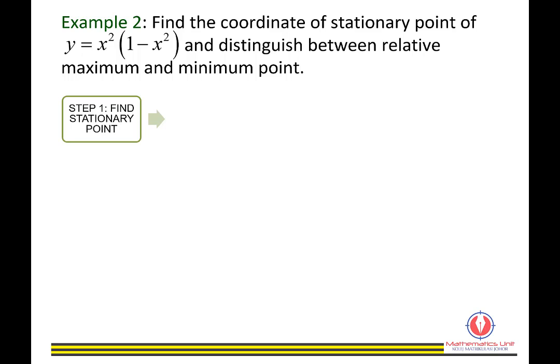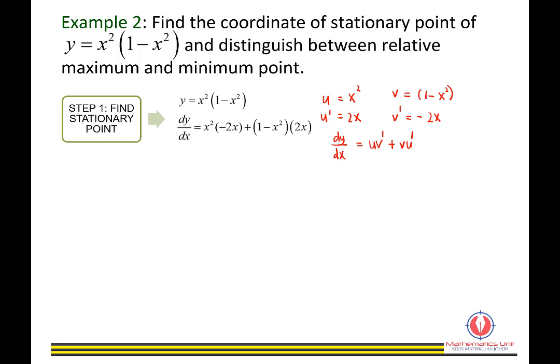In order to find stationary points, we start with the equation y equals x squared in bracket 1 minus x squared. We differentiate to find dy/dx. Identify u as x squared, so u prime is 2x, and v is 1 minus x squared, so v prime is negative 2x. Using the product rule formula uv prime plus vu prime, dy/dx equals x squared times negative 2x plus 1 minus x squared times 2x.